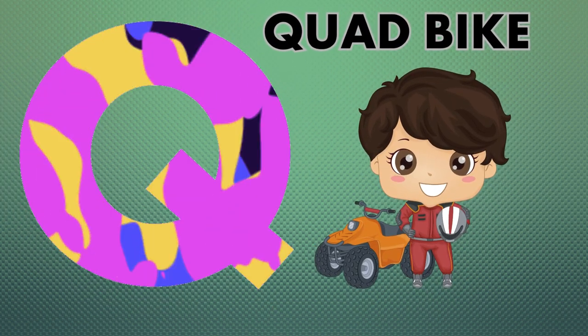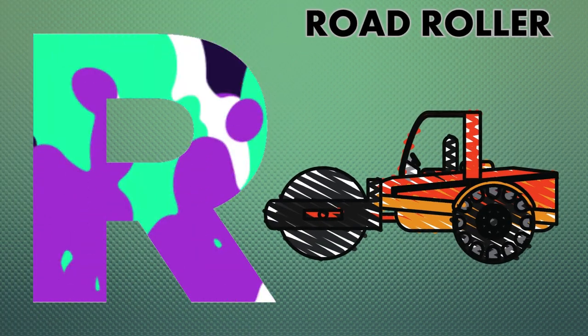Q is for quad bike, quad bike. R is for road roller, road roller.